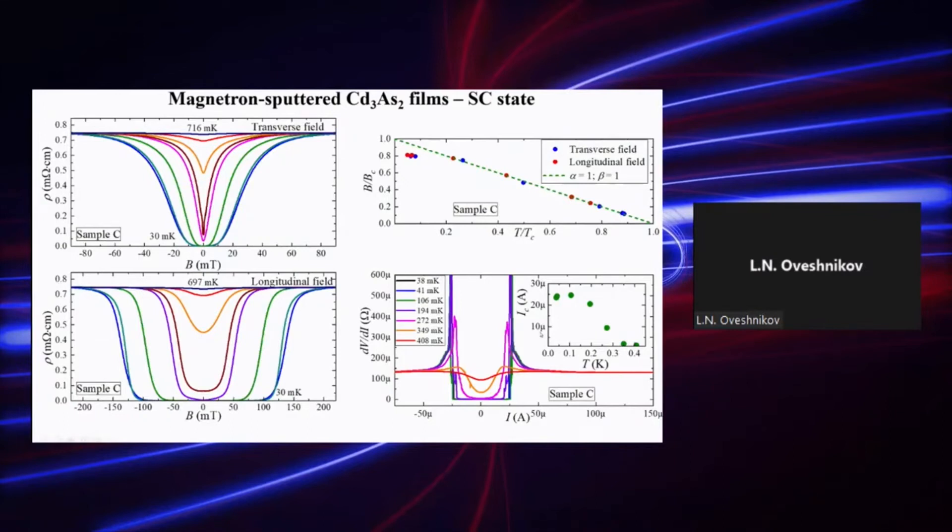Additionally, we measured differential resistance curves, which allowed us to roughly estimate critical current, which appeared to be around 25 microamperes for this sample.